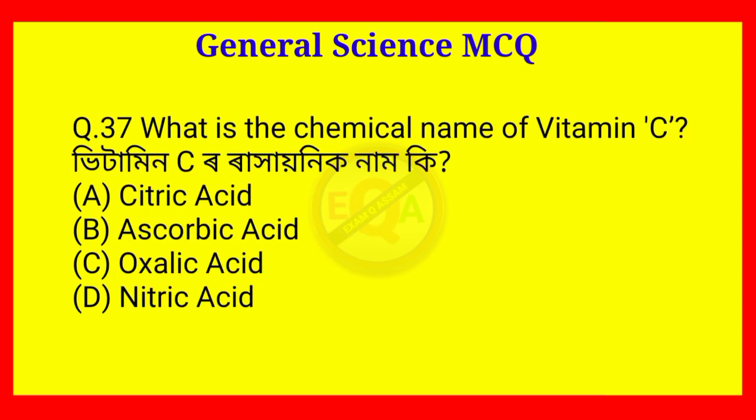Question number 37. What is the chemical name of Vitamin C? The answer is Option B — Ascorbic acid.